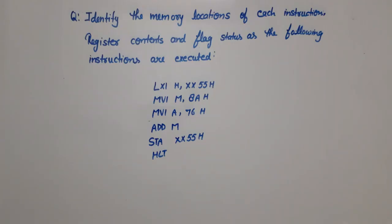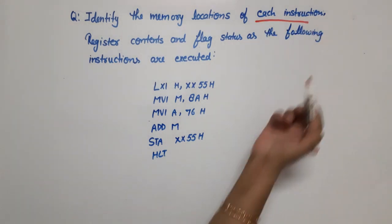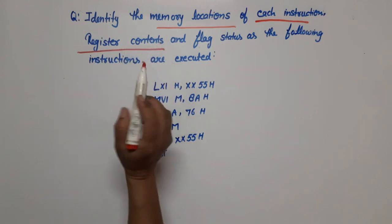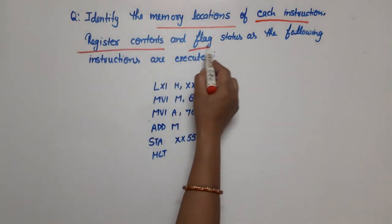Hello everyone. In this video lecture on microprocessors, I am going to discuss one question on the 8085 processor. The question is: identify the memory location of each instruction, the register contents, and the flag status after the following instructions are executed. So three things are required: first, memory location of each instruction; second, register contents; and third, flag status.